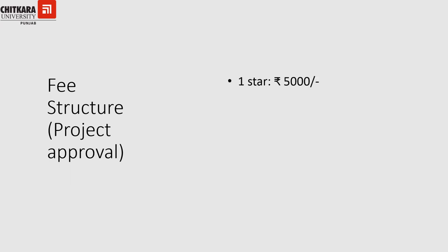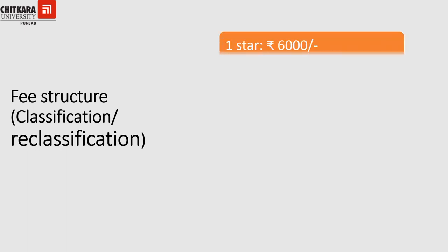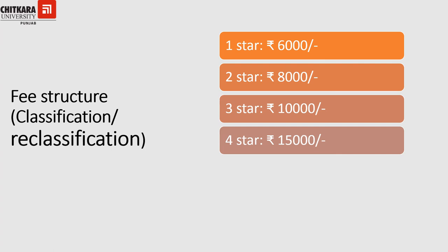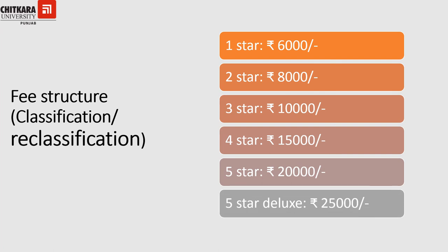The fee structure for the project approval stage of star classification is as follows: one star — ₹5,000; two star — ₹6,000; three star — ₹8,000; four star — ₹10,000 (project approval) and ₹15,000 (classification); five star — ₹20,000; and five star deluxe — ₹25,000.